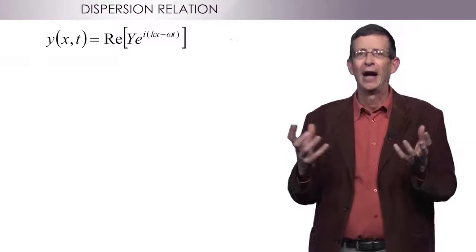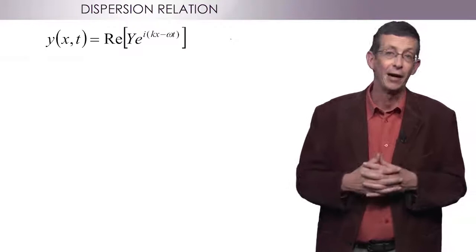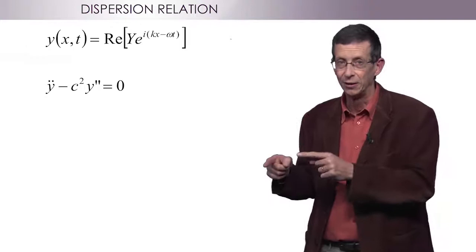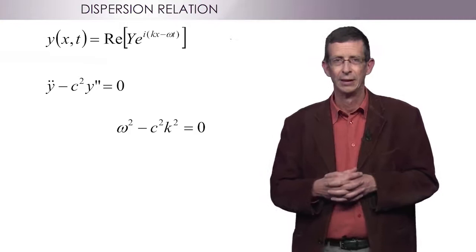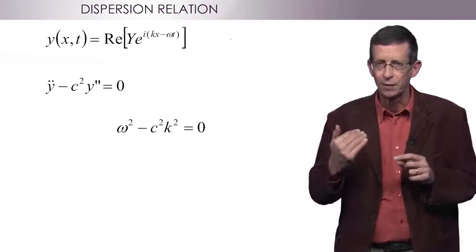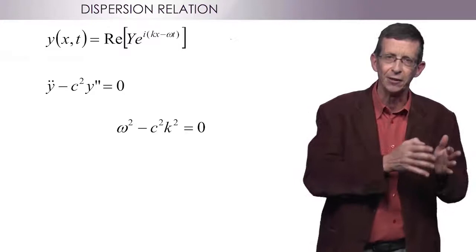More generally, I can look for solutions y of the form of the real part of e to the i(kx minus omega t). Using the cable equation, I get omega squared minus c squared k squared equals zero.